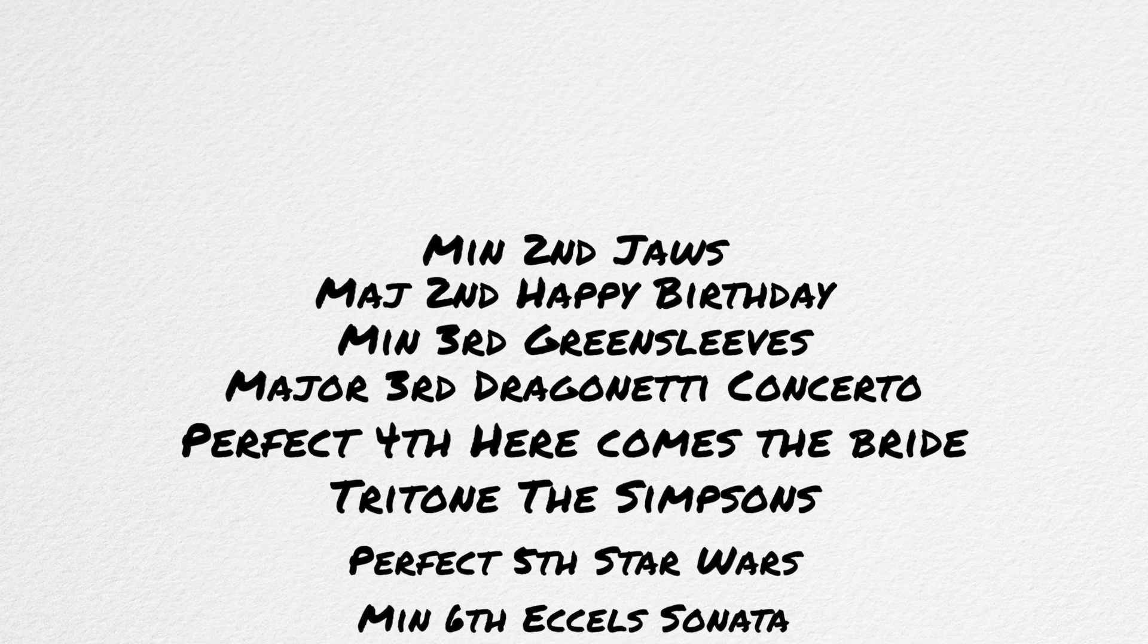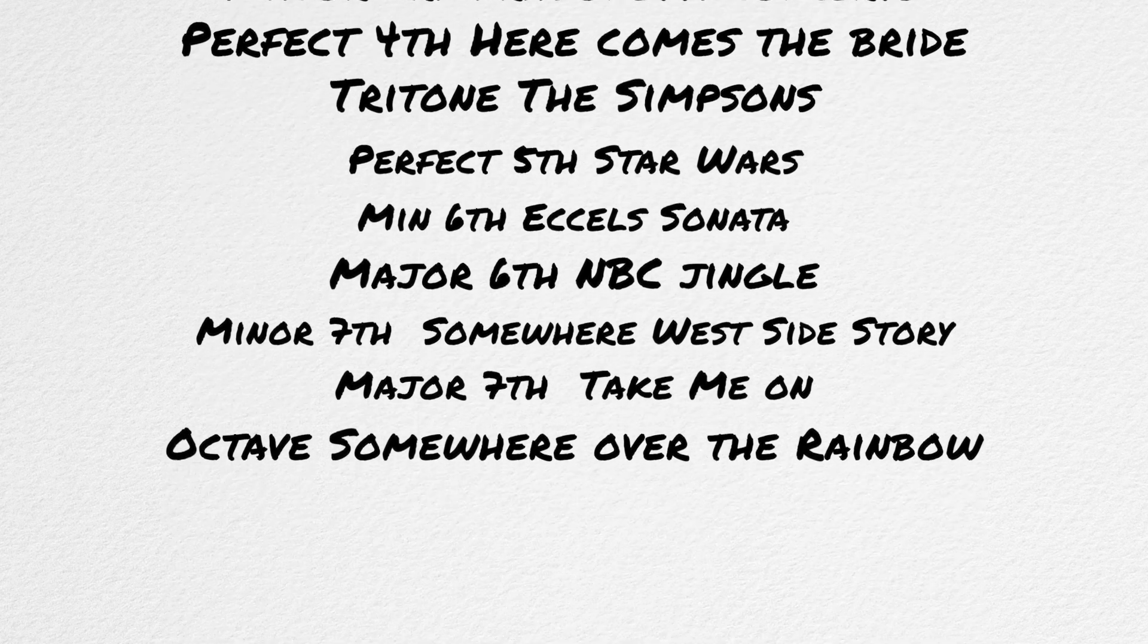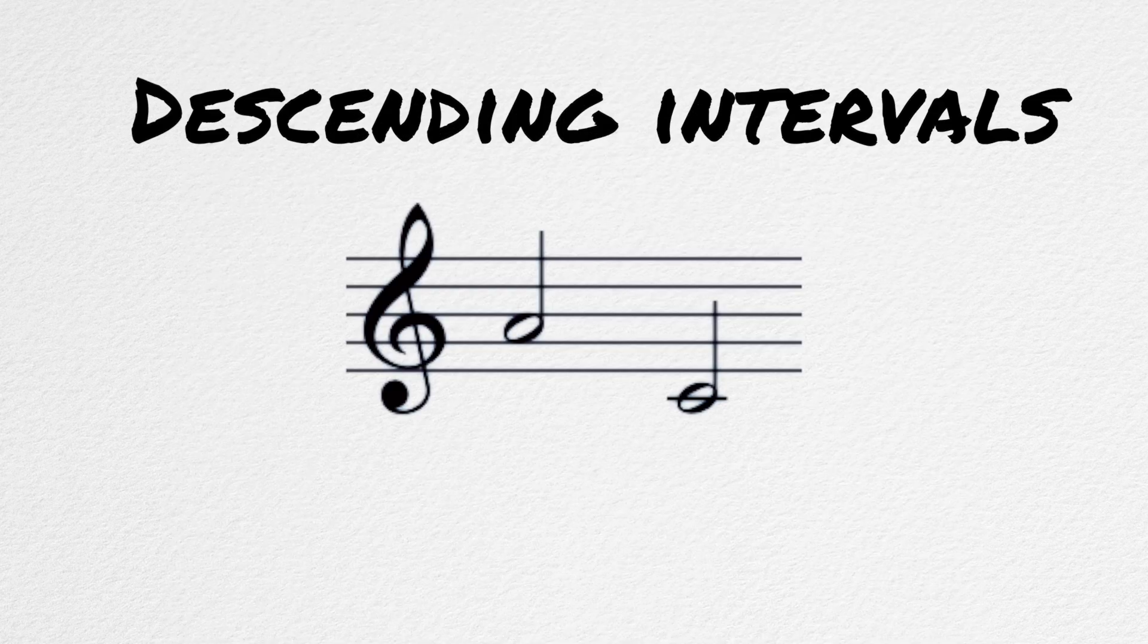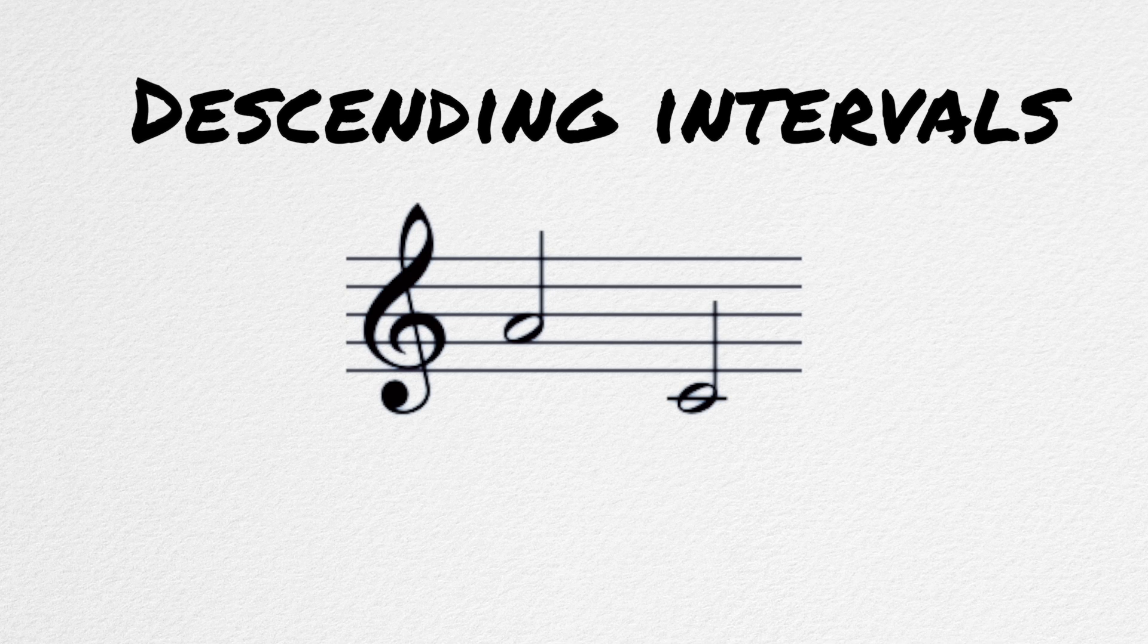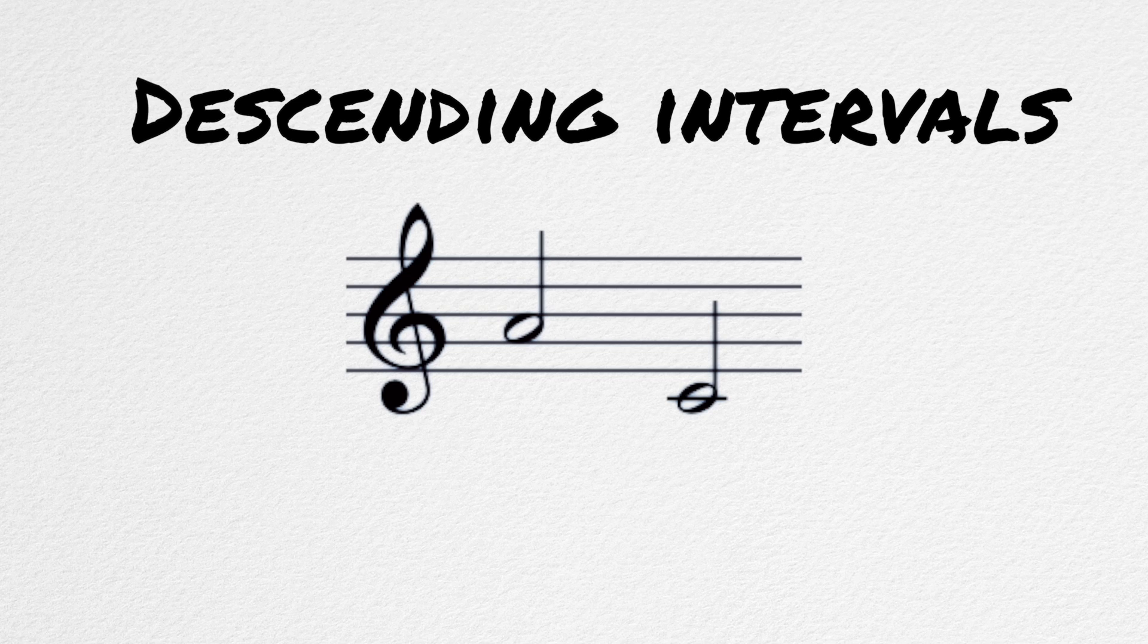But instead of using these examples exactly, I would recommend using songs that you know well. This will work much better than trying to use songs that you are not familiar with. Descending intervals can be done in a similar way, each with their own song examples. Or you can simply just sing the ascending interval first and then sing it backwards.